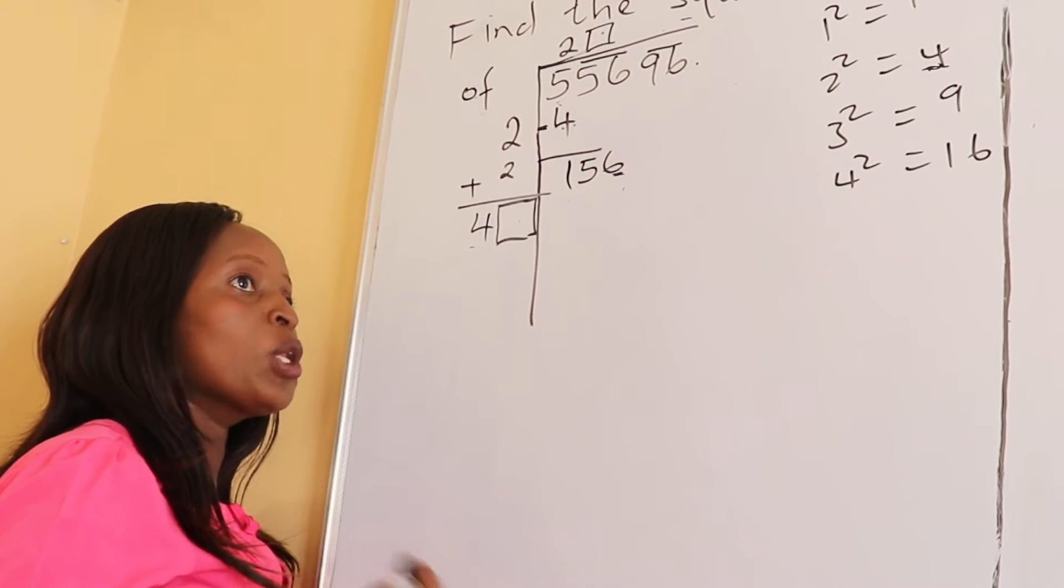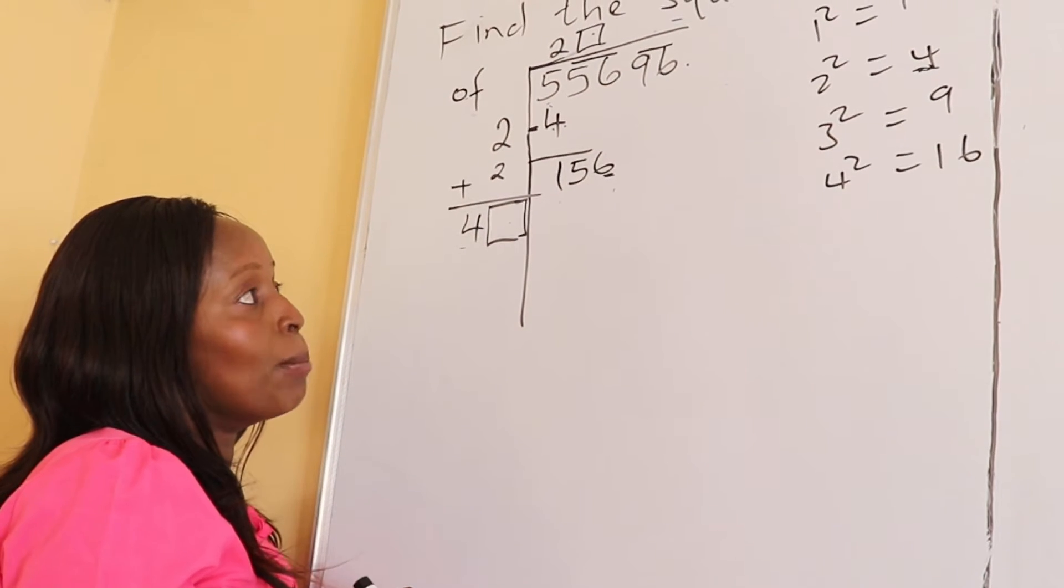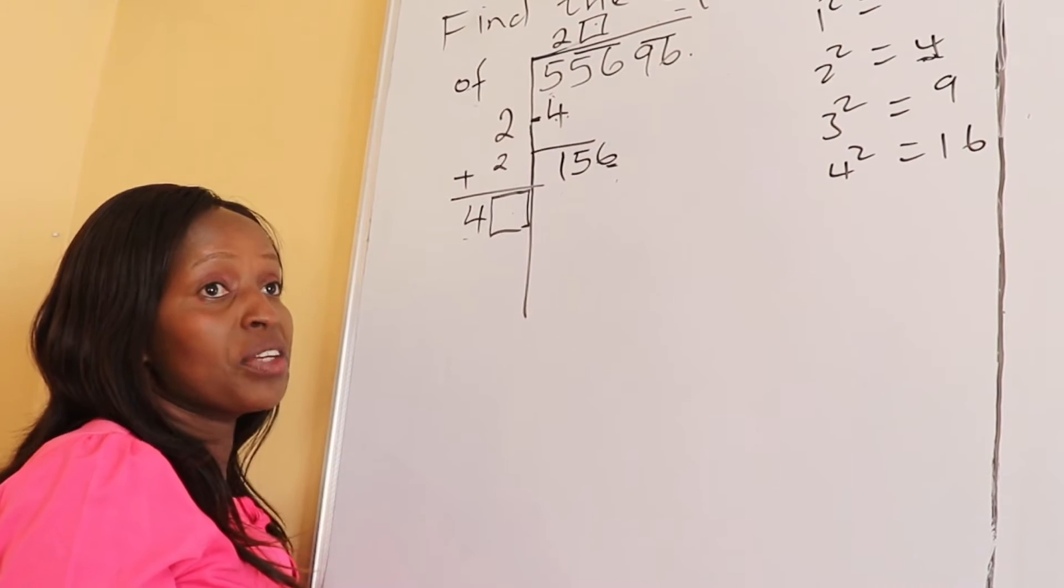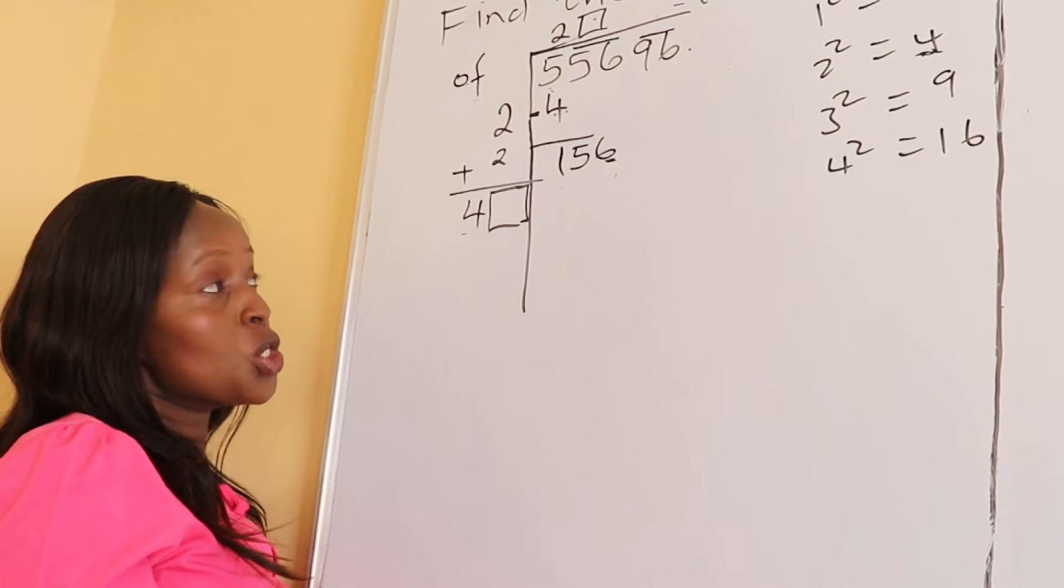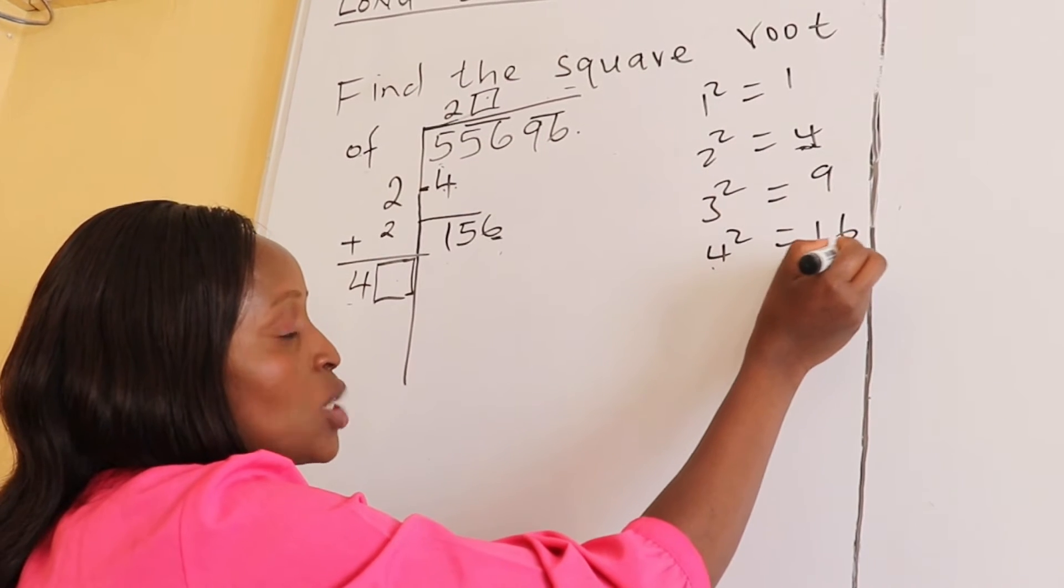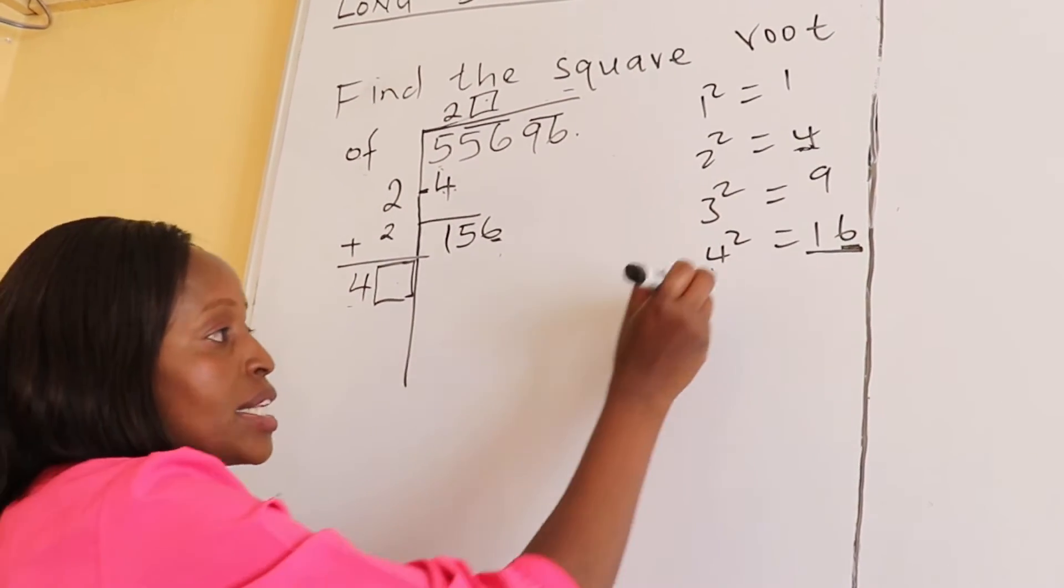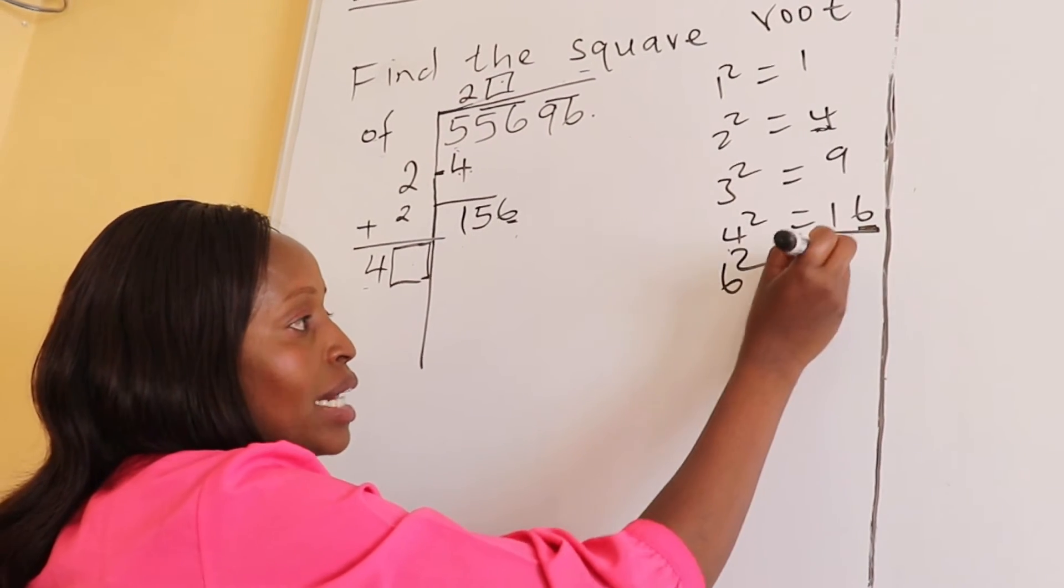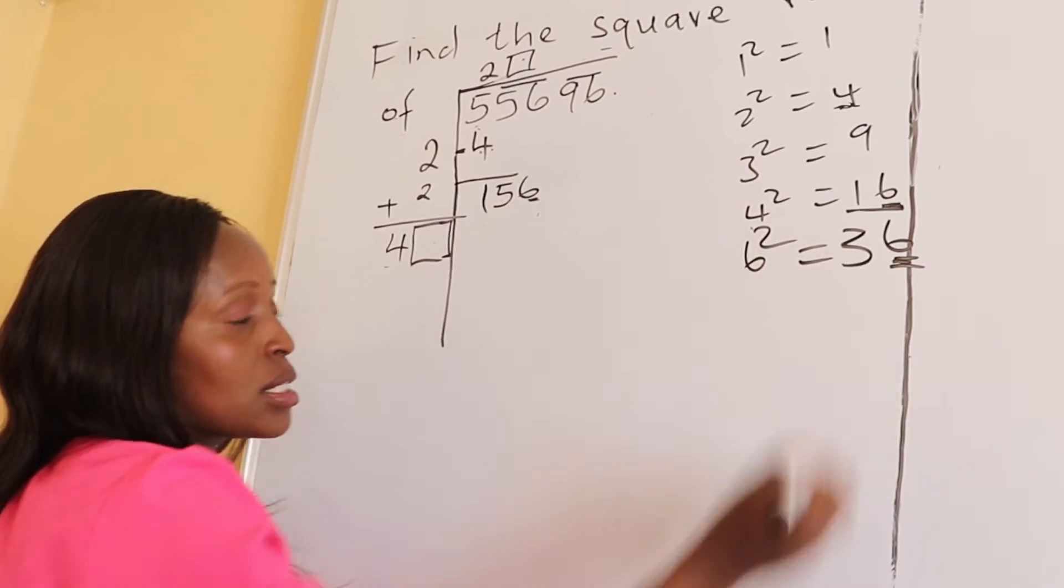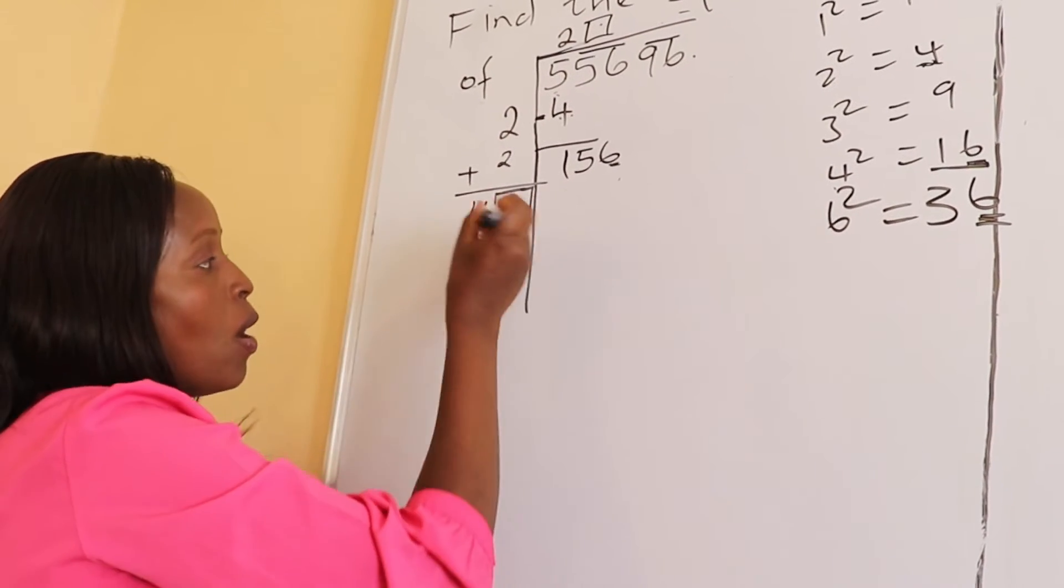What is going to guide us is the last digit here - our last digit is 6. So as you're looking for a number, you need to look for a number that when you multiply by itself ends with a 6. These numbers can either be 4, because 4 squared is 16 which ends with 6, or 6, because 6 squared is 36 which also ends with 6.